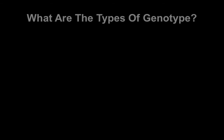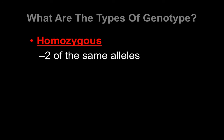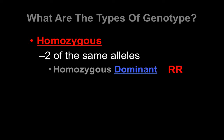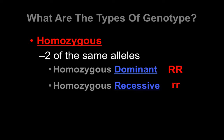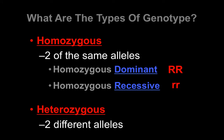We have specific names for these genotype combinations. We use the word homozygous when there are two of the same allele — homo means same. So two big letters is homozygous dominant, and two little letters is homozygous recessive. If you have one of each, you are heterozygous, because hetero means different. Heterozygous simply means big R, little r — no additional qualifier needed.